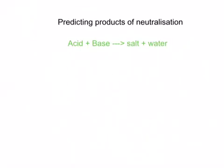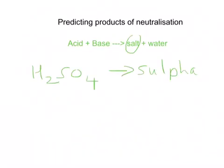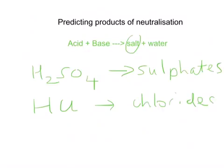When we react an acid and a base, we always form salt and water. The salt depends upon the acid that you use and the base that you use. Sulfuric acid, H2SO4, will form sulfates. Hydrochloric acid, HCl, will form chlorides. Nitric acid, HNO3, will form nitrates.